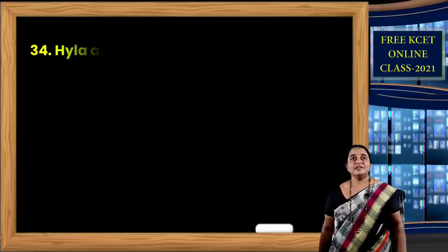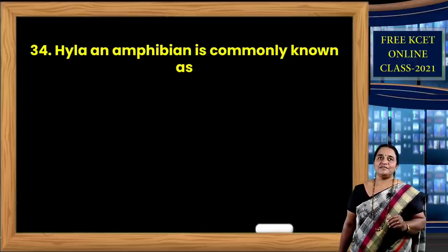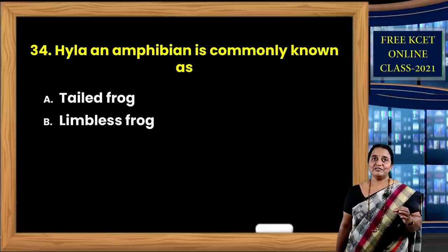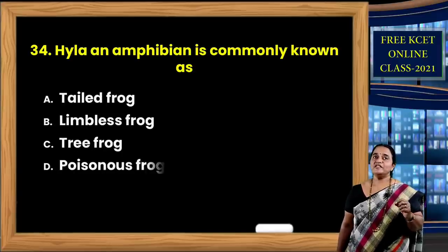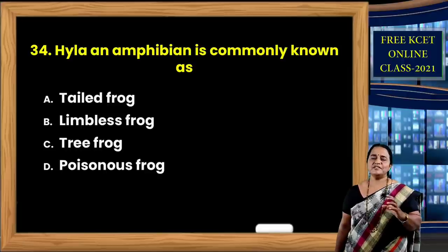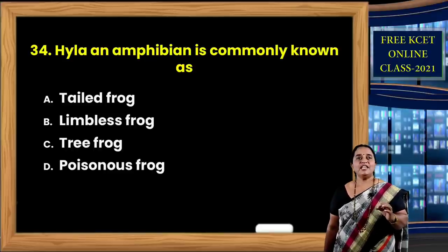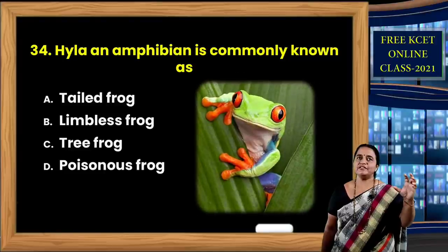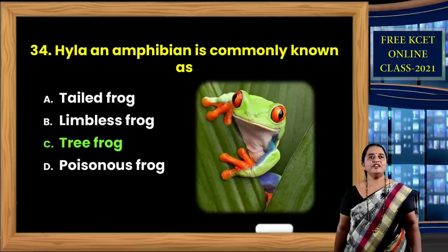Question 34: Hyla is an amphibian, commonly known as — options: tailed frog, limbless frog, tree frog, poisonous frog. Poisonous frog is called Bufo. Tree frog is the common name for Hyla — a very small and active frog always found on trees. So Hyla is commonly known as tree frog.